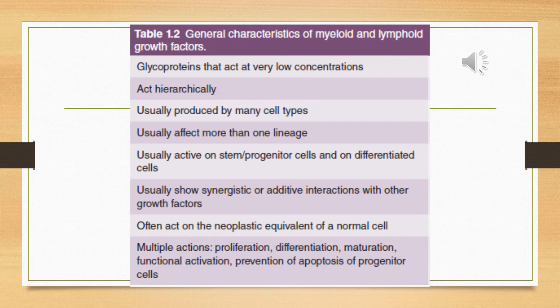Growth factors often act on the neoplastic equivalent of normal cells. They have multiple actions — they are responsible for proliferation, differentiation, maturation, functional activation, and prevention of apoptosis of progenitor cells. Without growth factors, there are chances of abnormal production of blood cells. A lack of growth factors, abnormal production of growth factors, or genetic deficiency of any growth factor can damage the normal growth of blood cells.